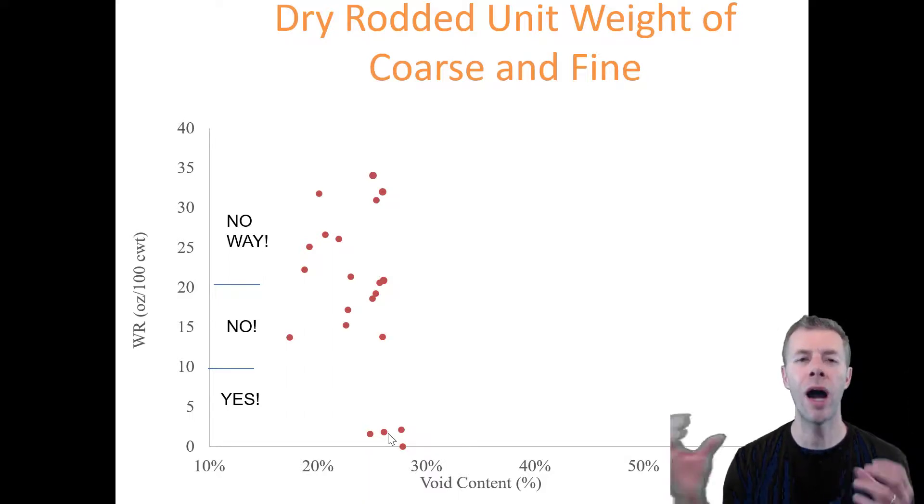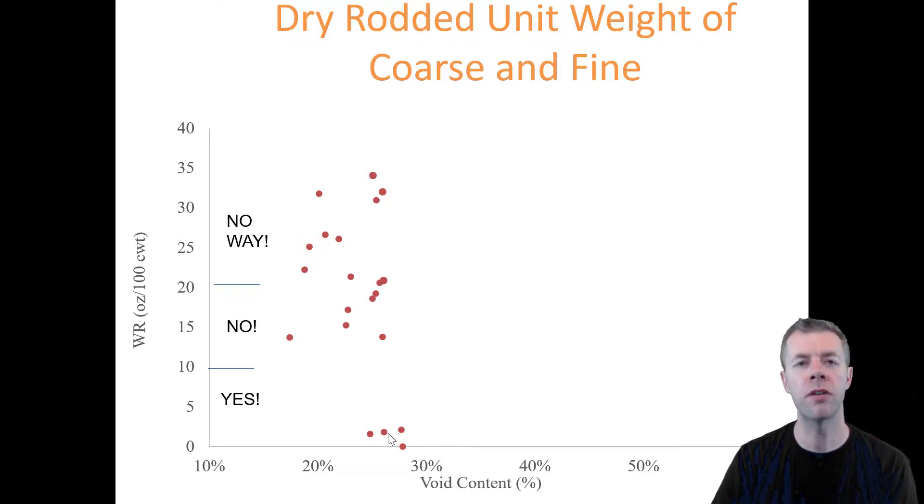And there's other people that have realized this in the past. And they said, well, it's not just about how tightly everything packs together. You have to come back and loosen the model, loosen everything up. And one of those is something called the modified Toffer model. Again, it tries to loosen it up, tries to adjust for this phenomenon. But again, you would think the ones with the very lowest voids content in the Toffer model would have the best performance. That is not the case. We have some with very similar voids content doing very poor in the no way category, and some that are performing great in the yes category. How can that be?